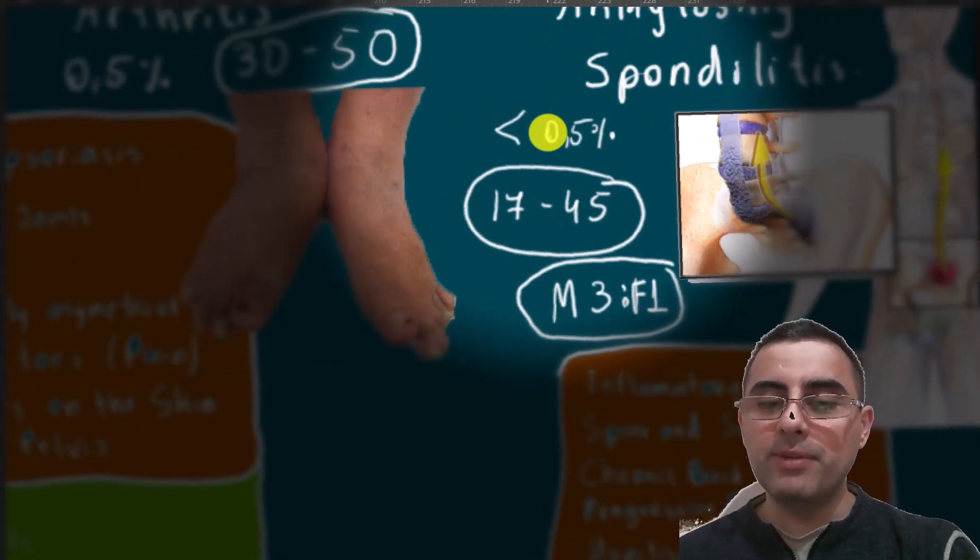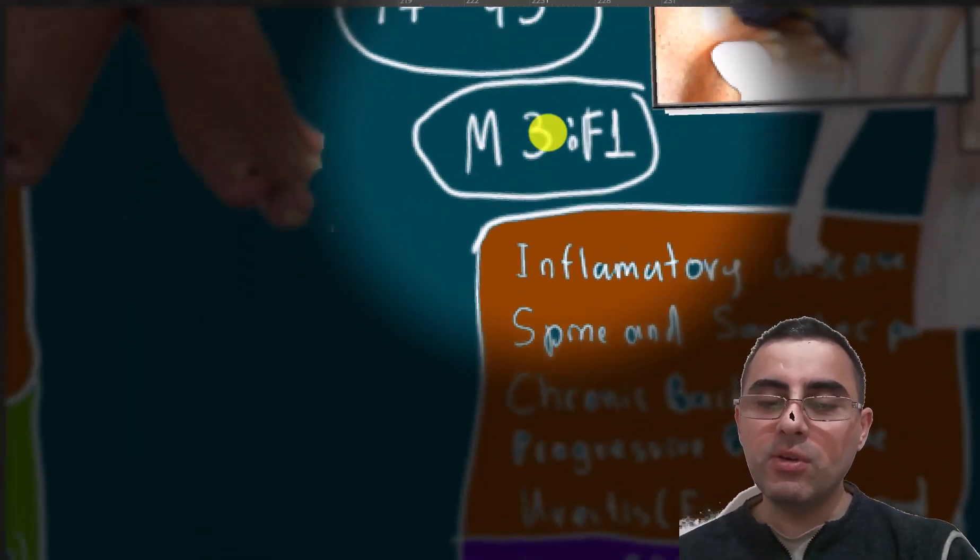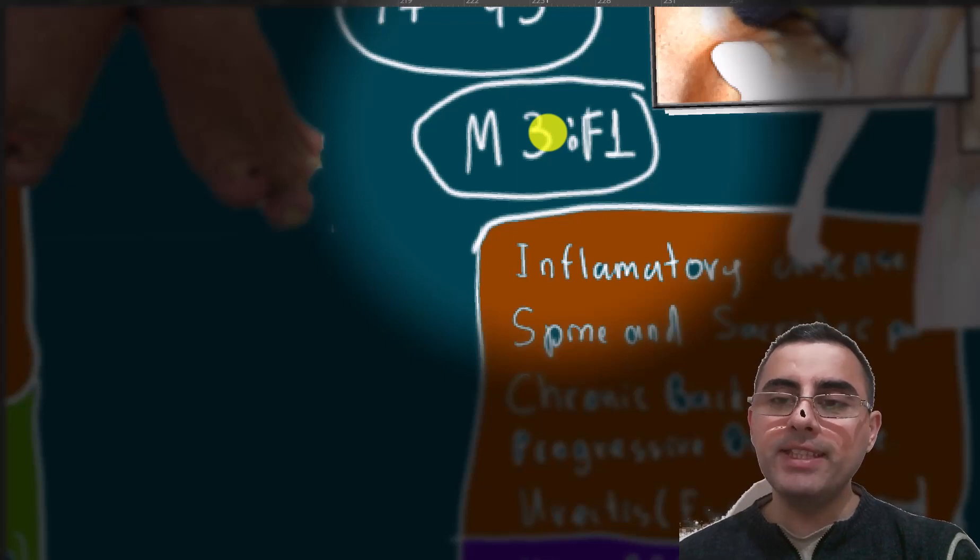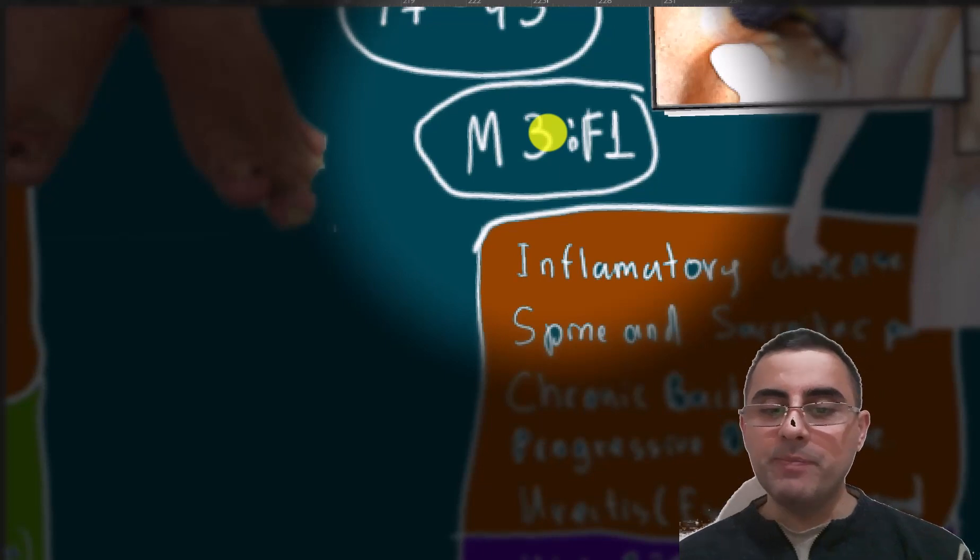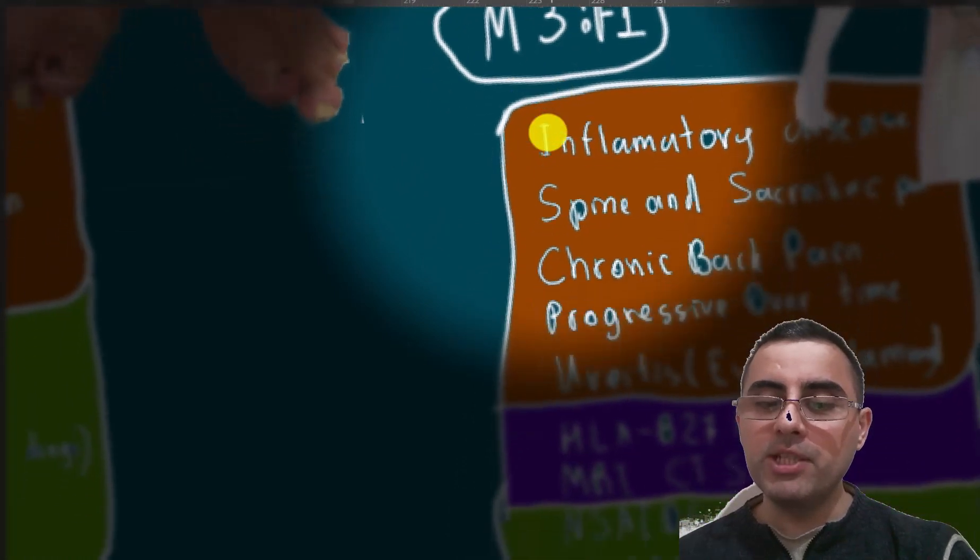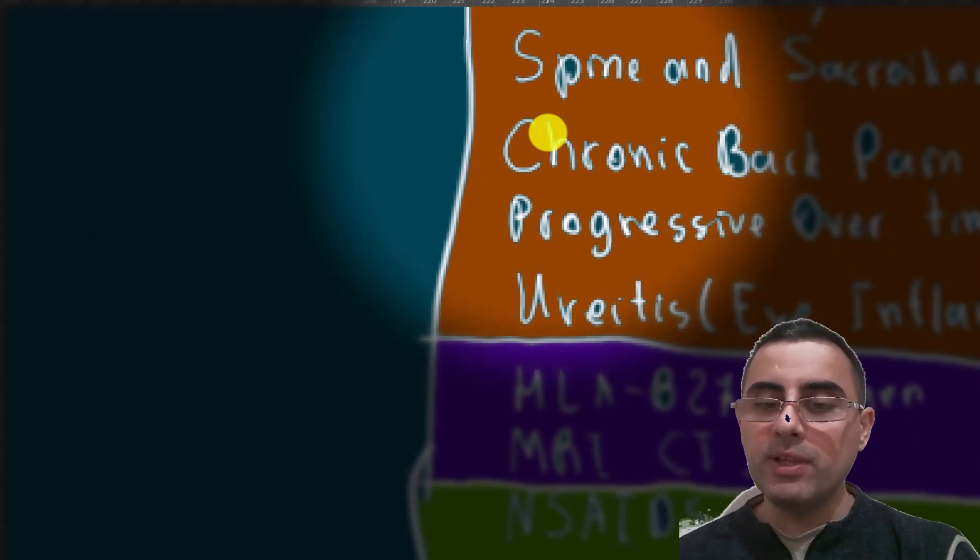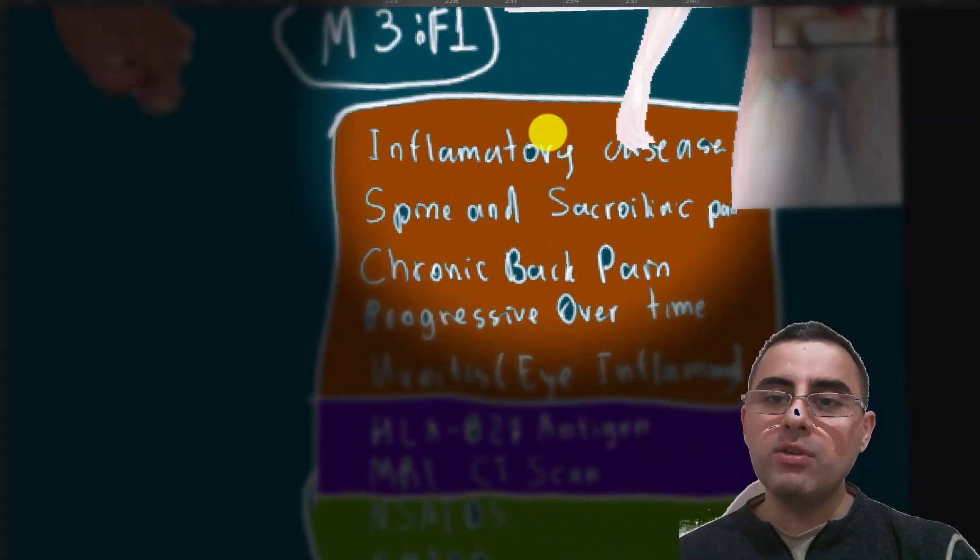It is an inflammatory disease also. Spine and sacroiliac pain is common, and chronic back pain is the hallmark of this disease, which progresses over time. Sometimes uveitis can occur, which means inflammation. HLA-B27 antigen is a marker of this disease.